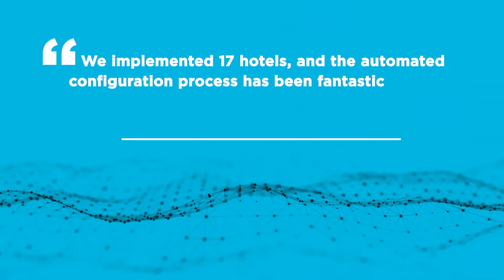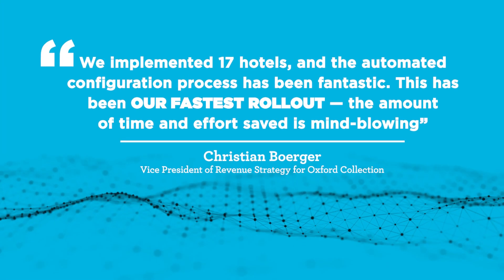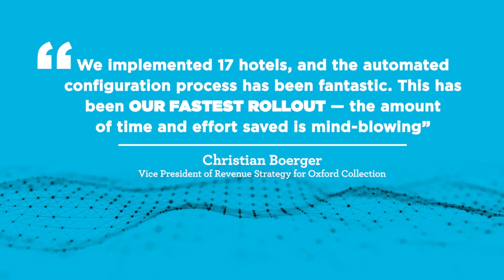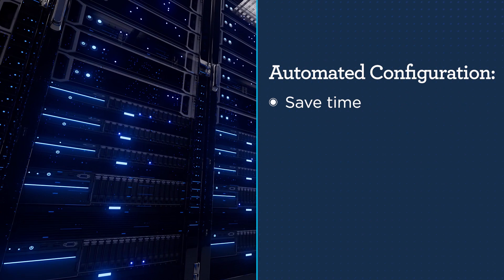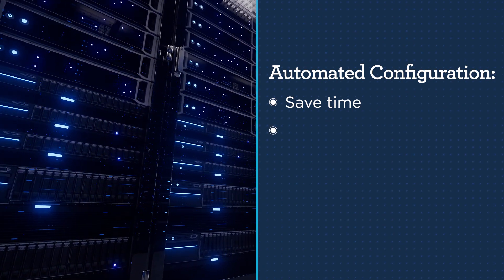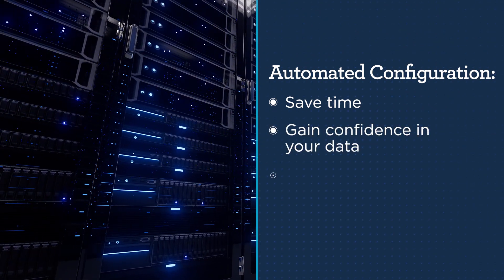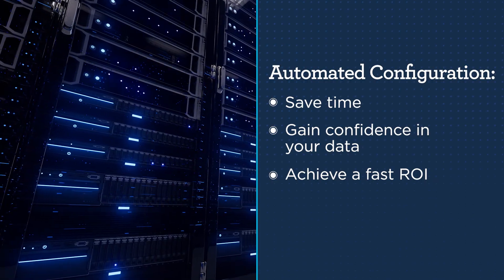Configuring your RMS can be a work-intensive process that competes with your other revenue-generating priorities. Automated configuration for G3 RMS solves this by using your property's historical data to configure the system for you. You simply validate the configuration and make small tweaks based on your personal knowledge of the property, saving time with less manual setup and training, gaining greater confidence in your system's decisions, and achieving a faster return on your investment.